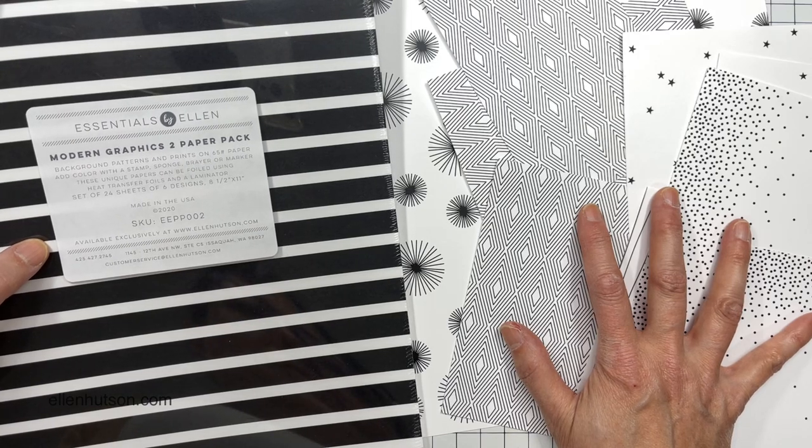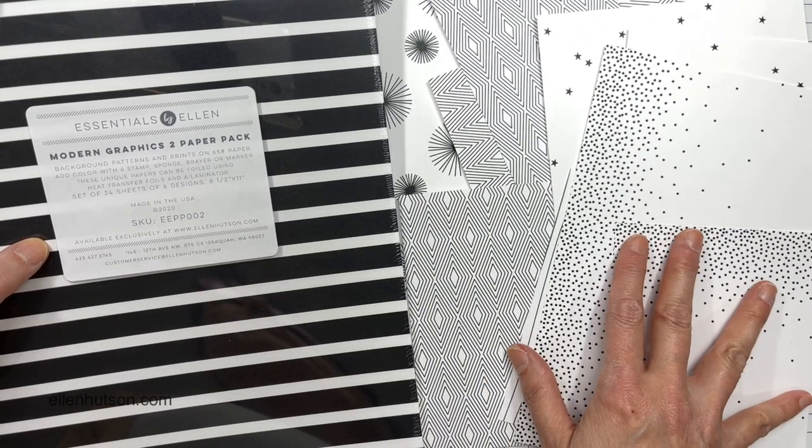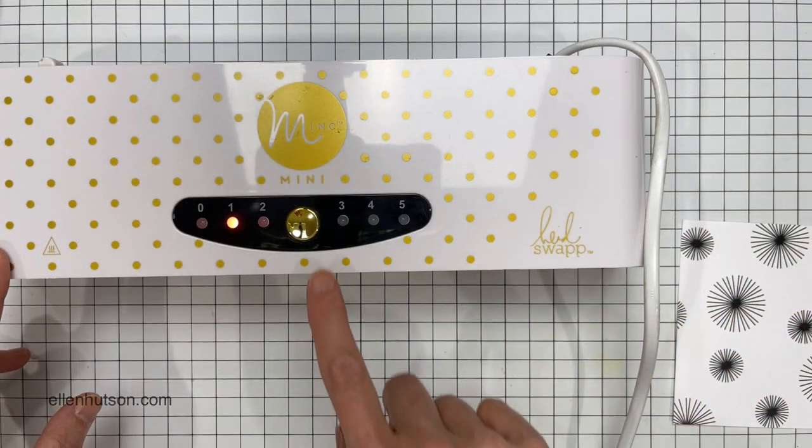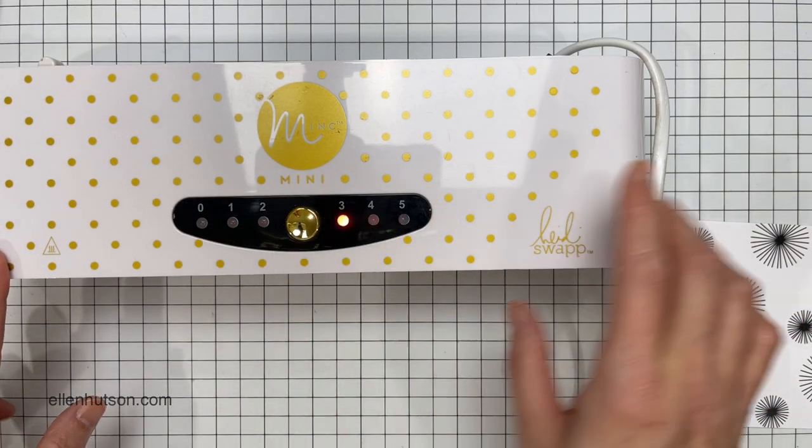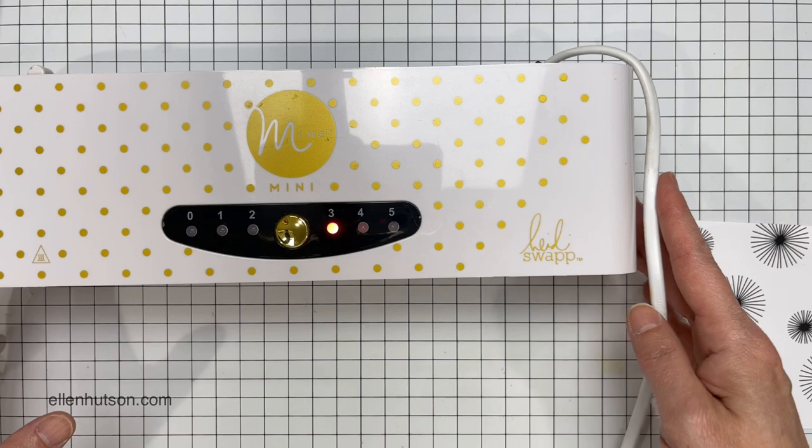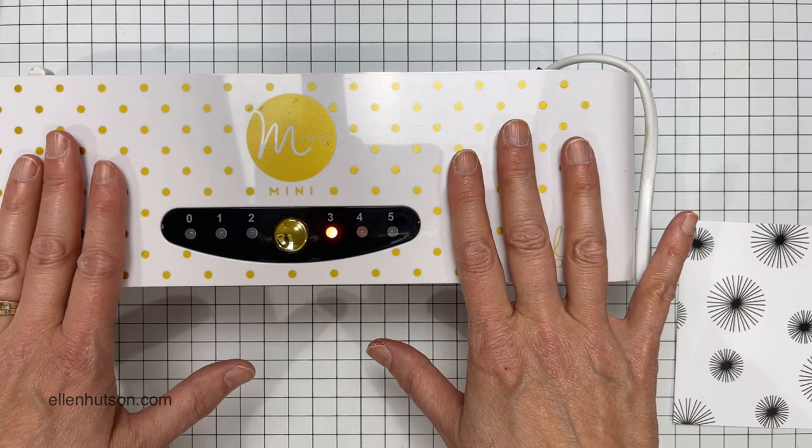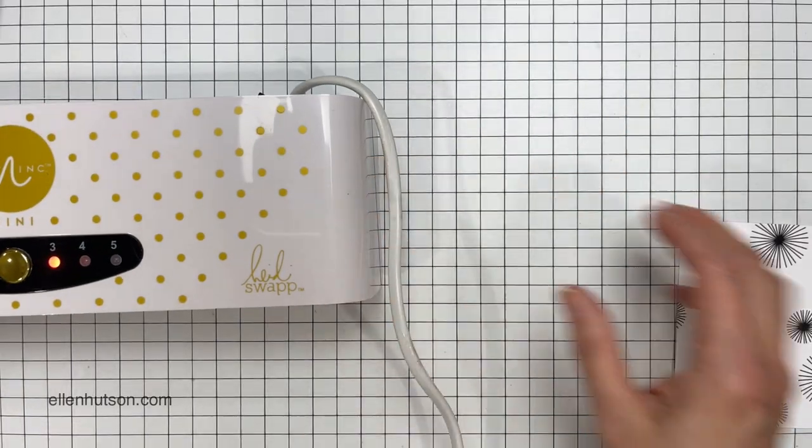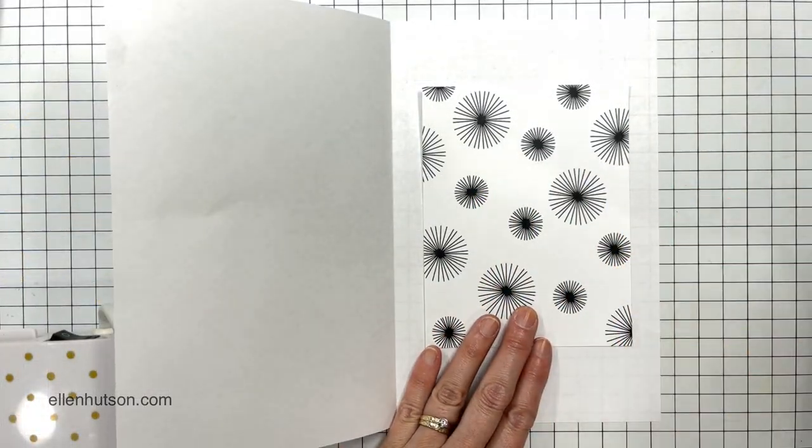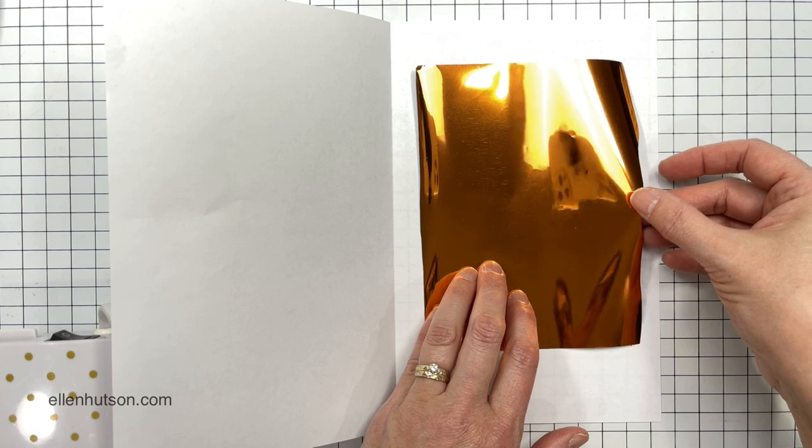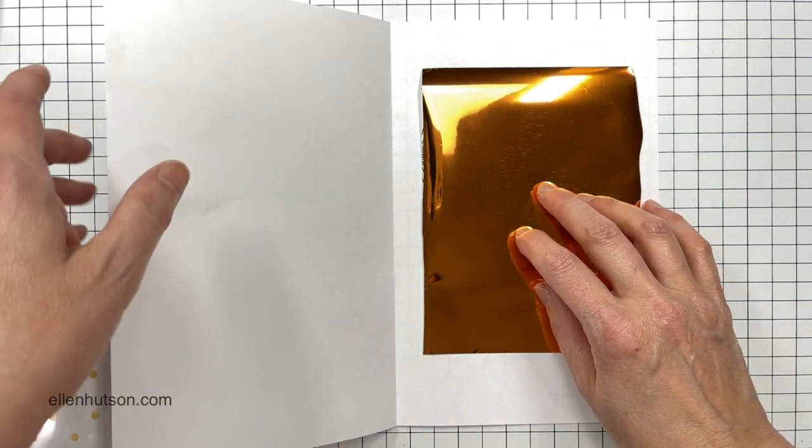I'm going to move on while that's drying and grab the Modern Graphics Paper Pack. This is volume two and it's full of some more wonderful patterns. And I grabbed the one that looked like Starbursts and cut it down to a quarter of an inch. And then I fired up my mink. You could use a laminator if you want, but these patterns can be foiled in a laminator or in the mink machine.